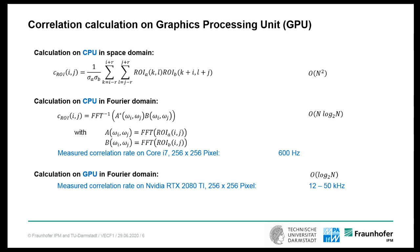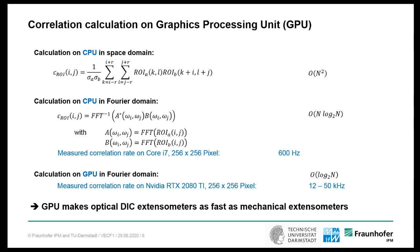A graphics processing unit, GPU, has thousands of processor elements. Therefore, it's a log-n problem, which means acceleration of two orders of magnitude. There we achieved a correlation rate of up to 50 kHz. This means the GPU makes optical DIC extensometers as fast as mechanical extensometers.